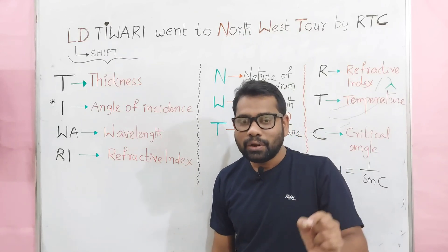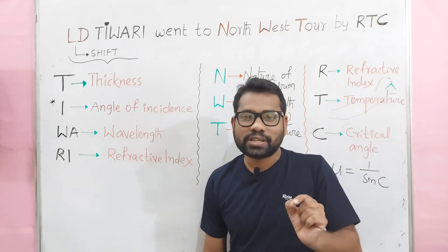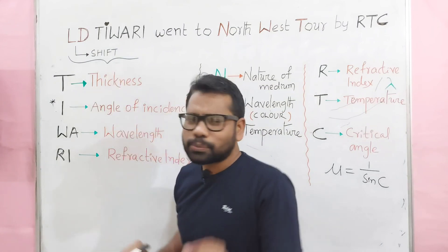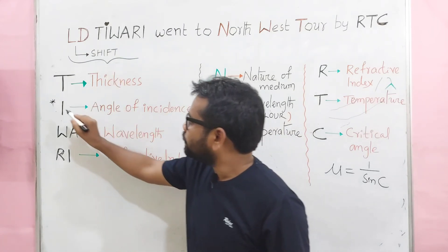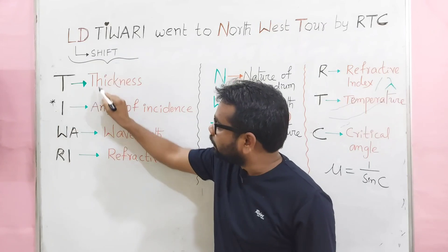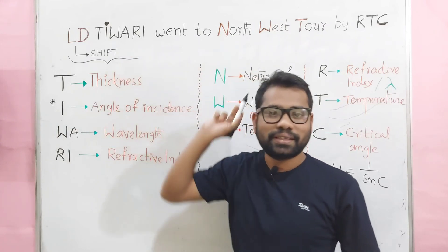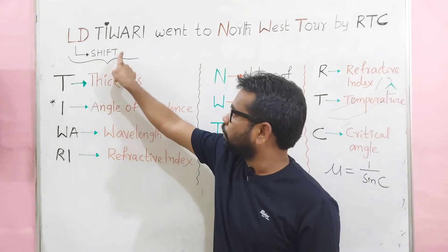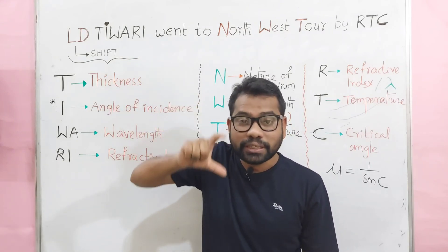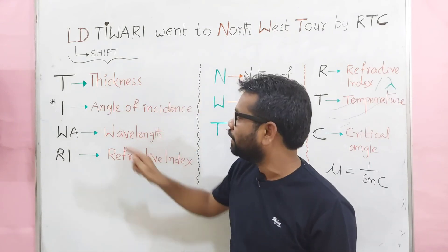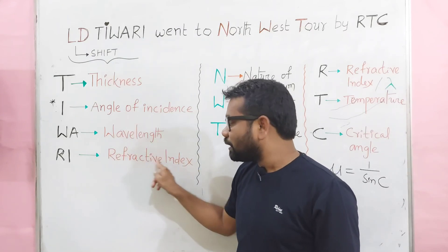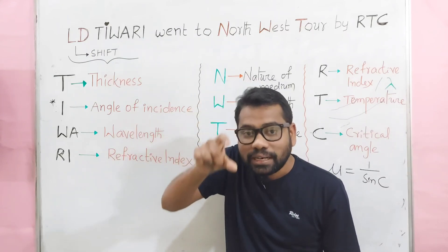Here we will also learn one more question — on which factor does the shift depend? The small difference is that here you just neglect I. So shift depends on the other 3 factors: thickness of the medium (denser medium), wavelength of the light used, and refractive index of that medium.